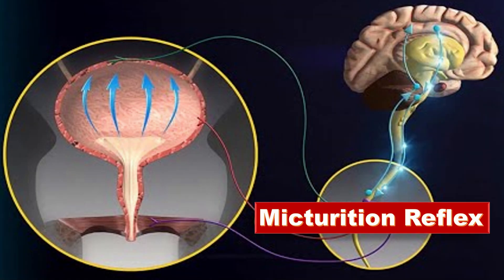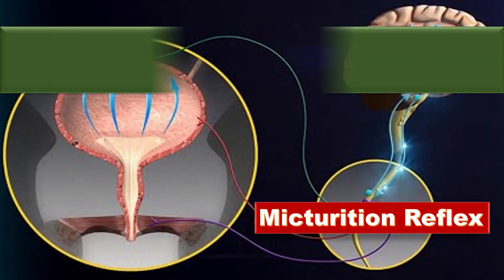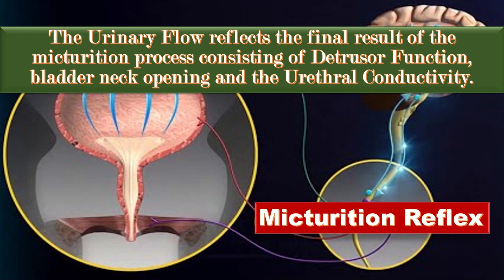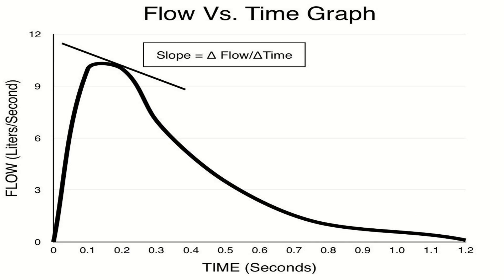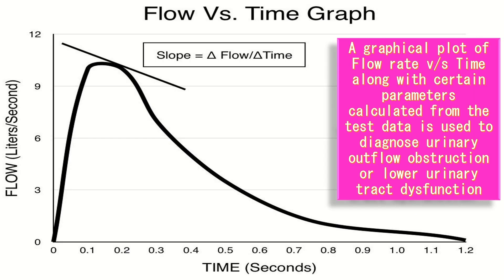What is the role of the micturition reflex? The urinary flow reflects the final result of the micturition process, consisting of detrusor function, bladder neck opening, and urethral conductivity. A graphical plot of flow rate versus time, along with certain parameters calculated from the test data, is used to diagnose urinary outflow obstruction or lower urinary tract dysfunction.